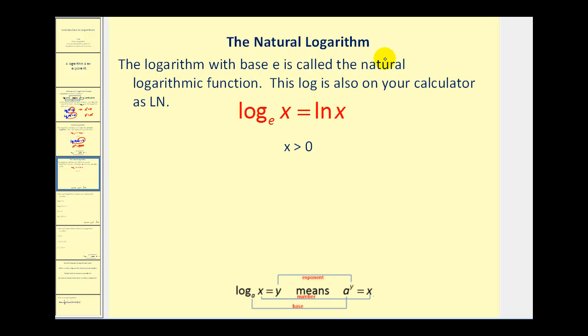The second log the calculator has is the natural logarithm. The logarithm with base e is called the natural logarithmic function. This log is also on your calculator as capital L, capital N. So you won't see log base e of x. It's written ln x. So you have to remember that this just means log base e. Remember e is an irrational number similar to pi, except it's approximately equal to two point seven one eight.